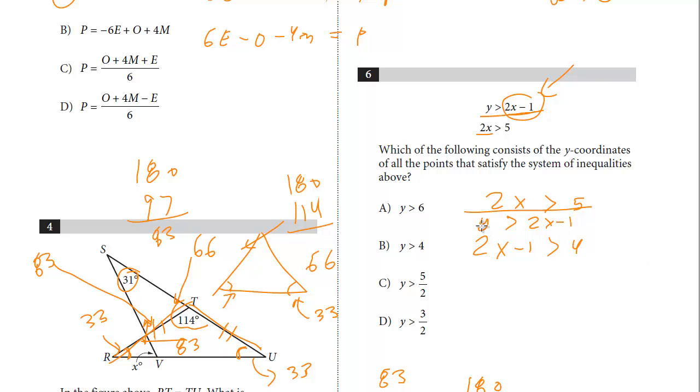This is almost sort of like the transitive property. If Y is greater than 2X minus 1, and we have that same 2X minus 1 is greater than 4, we can say that Y is greater than 4.